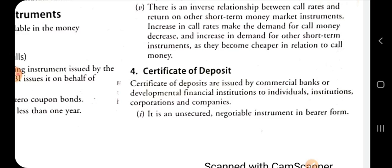When a company issues a certificate of deposit for short term funding purposes, no security is kept behind it. It is a negotiable instrument in the form of a bill of exchange. Bearer form means that whoever holds the certificate of deposit documents will receive the return on that certificate of deposit.